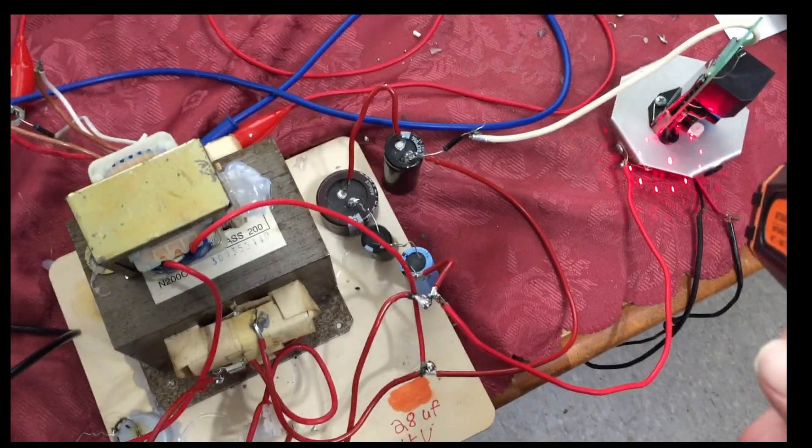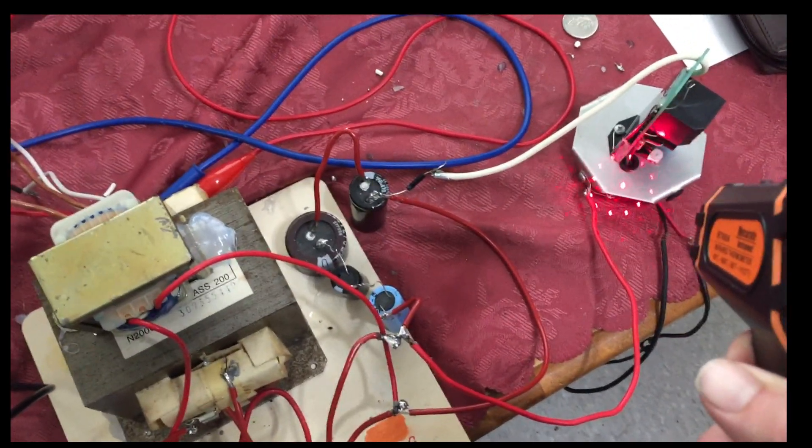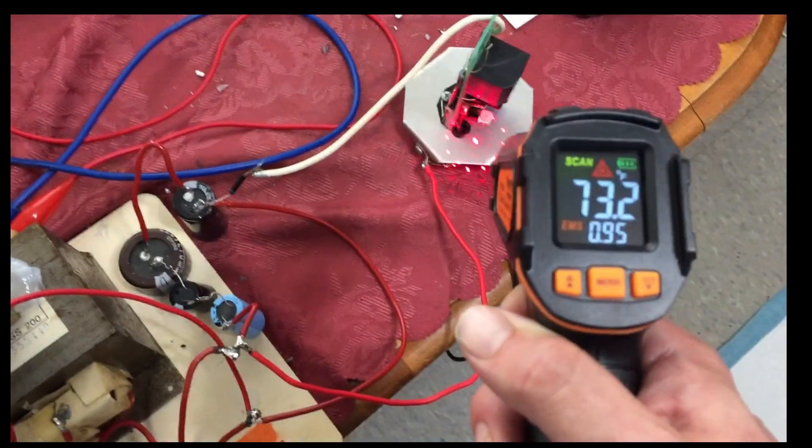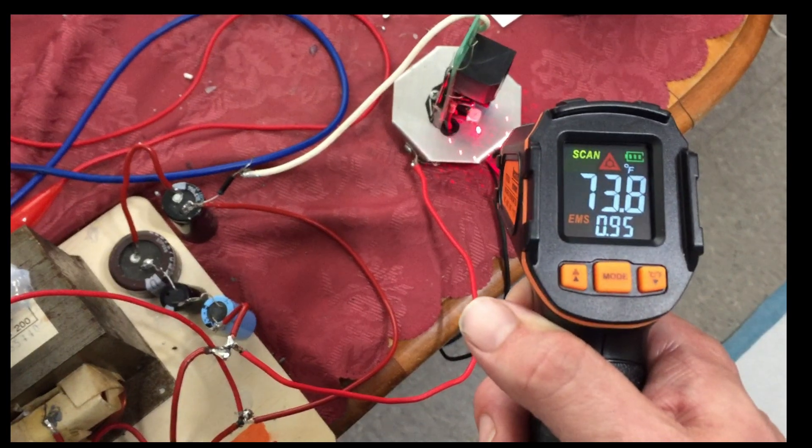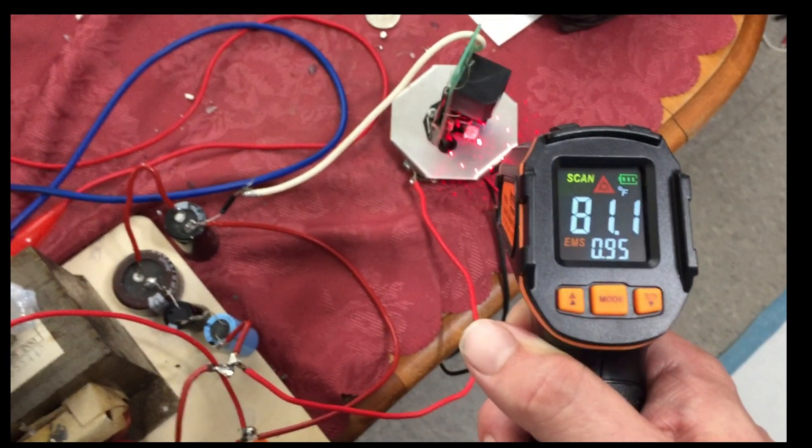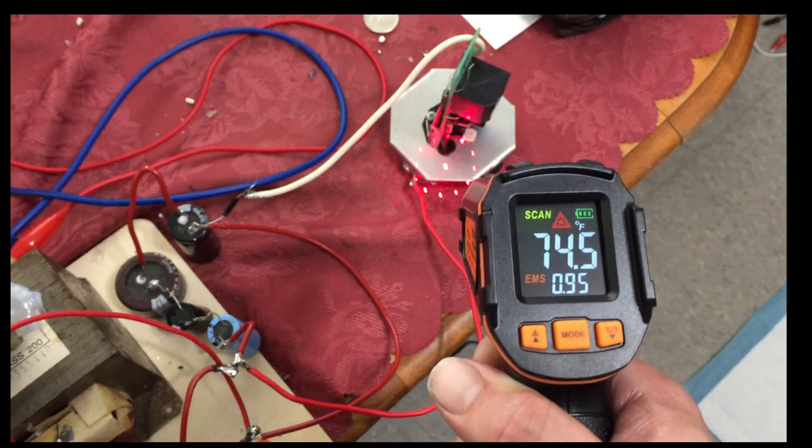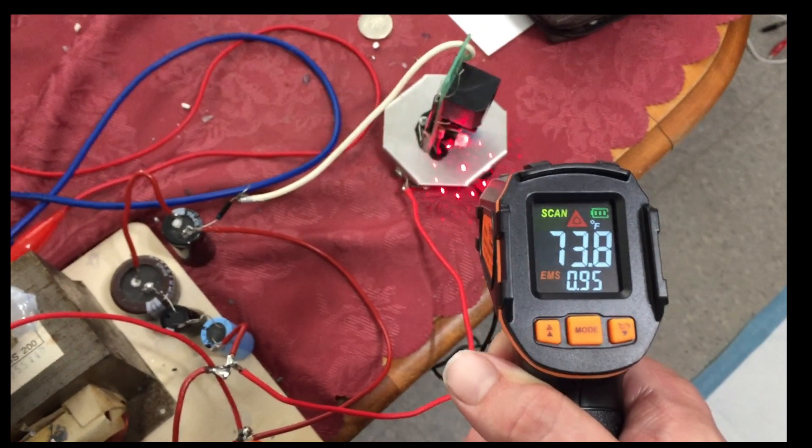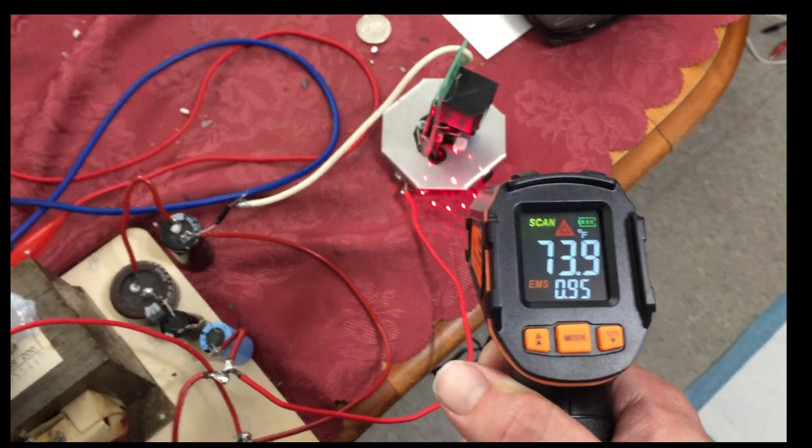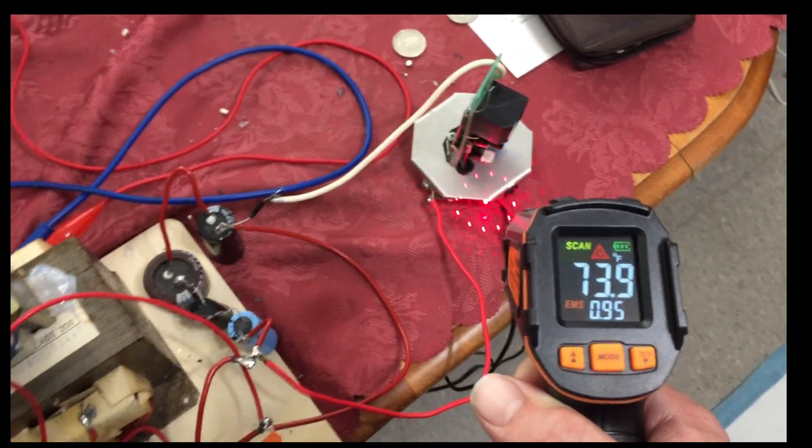And taking a look over here on the heatsink, this is usually plugged in direct. It's usually so hot you can't touch it. So now that it's limited to a few milliamps, 81 degrees. That's really nice around the heatsink. Very minimal heat, which is great.